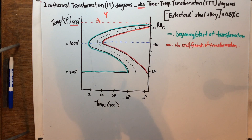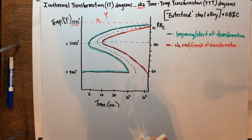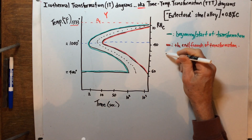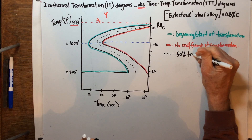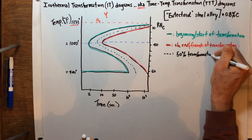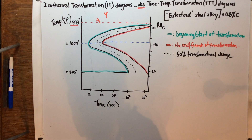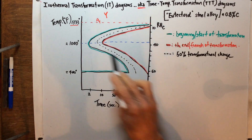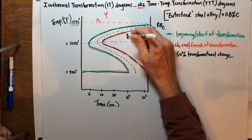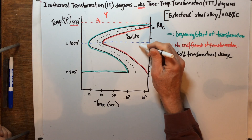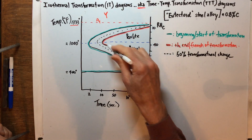This dotted line in the middle, kind of like the median on a highway, represents a 50 percent transformational change. Now this blue line is sort of a dividing line between what we know as pearlite and the other product we talked about — bainite. That's the dividing line.